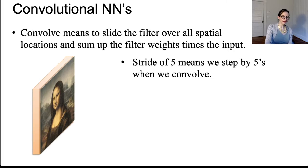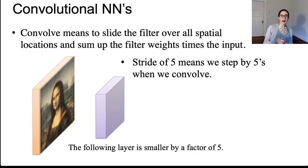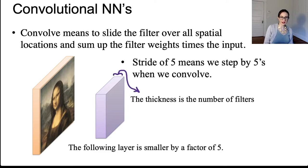Now a stride of five means that we're going to step by fives when we convolve. So when we pass the filter over the image, we now step by fives. And then we record the information in the next layer of the neural network, which is now a factor of five smaller in both dimensions of the image. Now the thickness of the next layer is the number of filters that we convolve with, because we can convolve with any number of filters that we like.